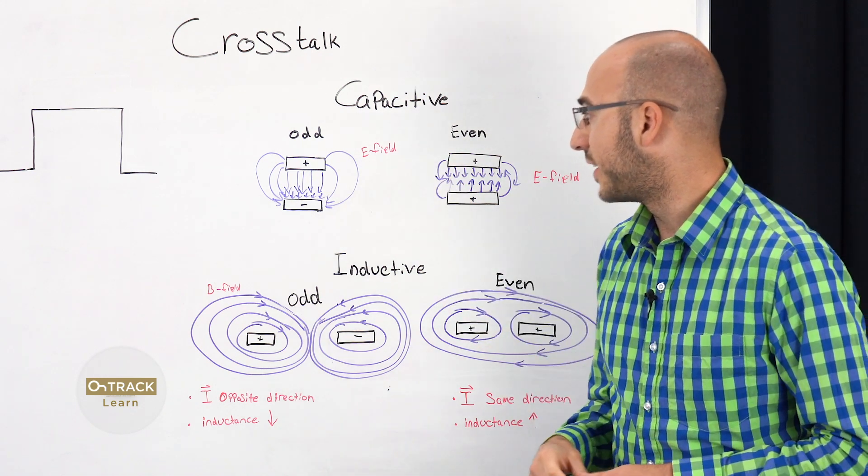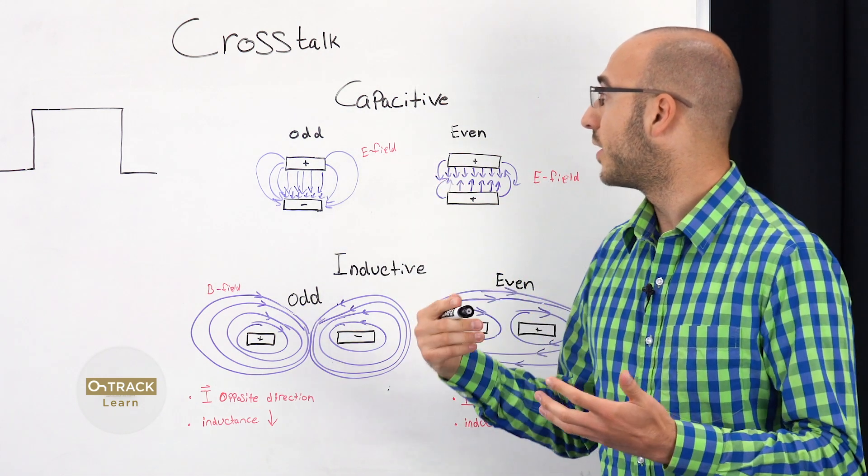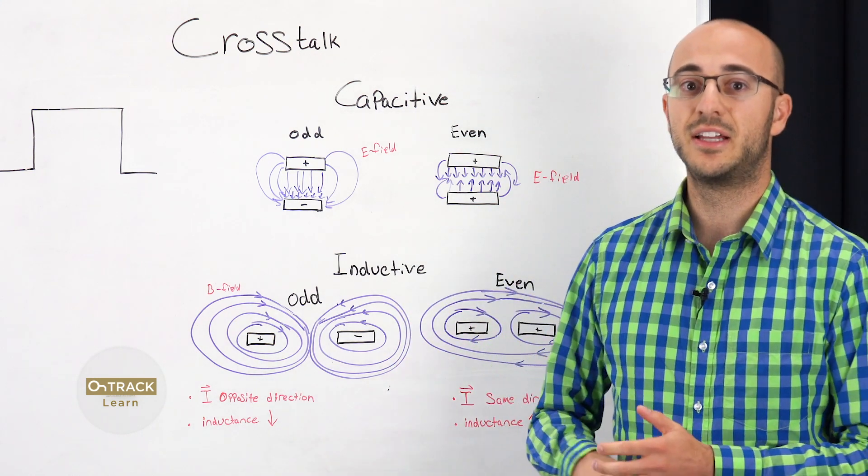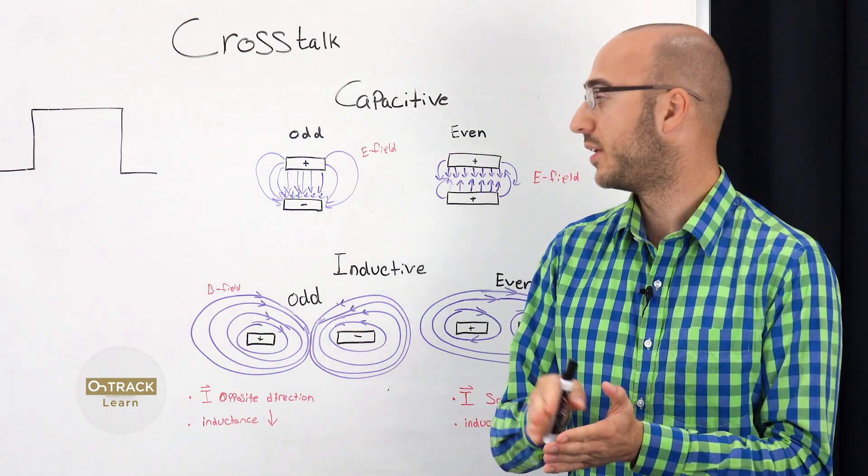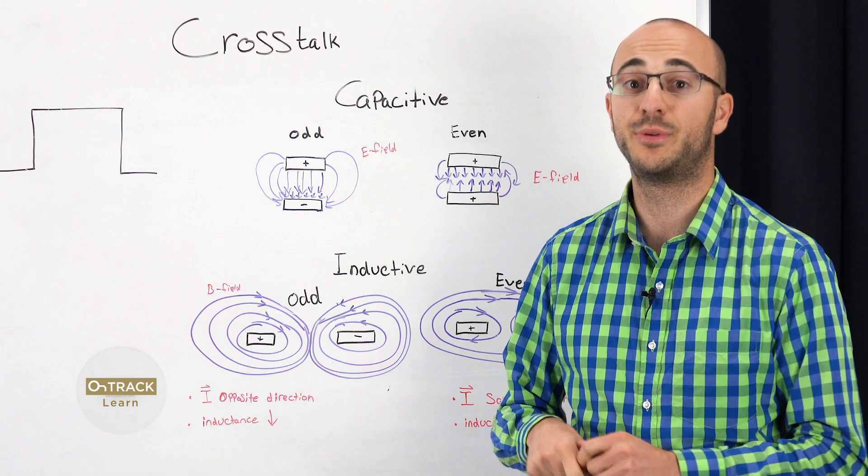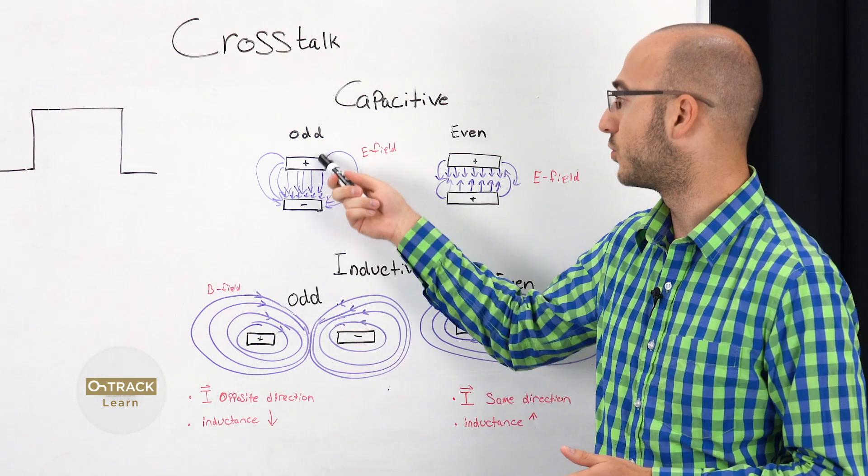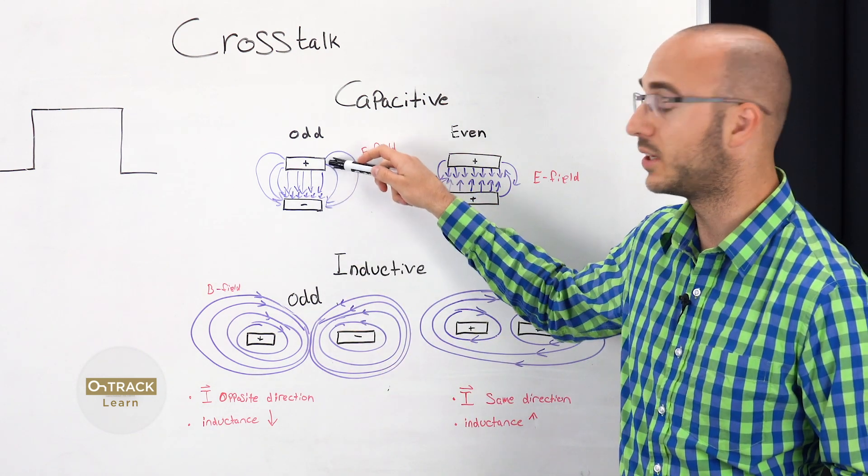When you're out of phase, actually, let me take one step back. What capacitive crosstalk is, is vertical coupling of the electric fields between two conductors or traces. So these would be on separate layers.